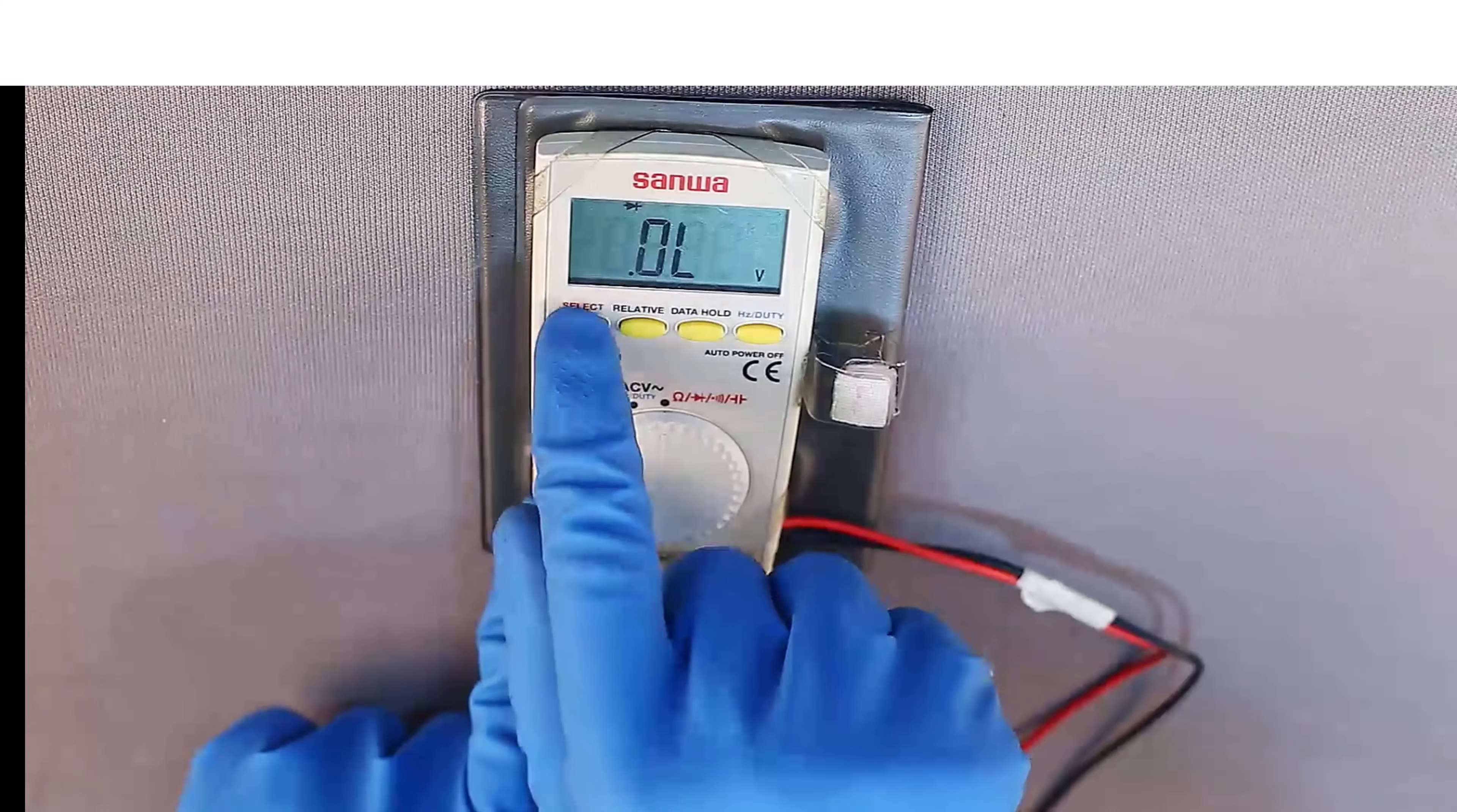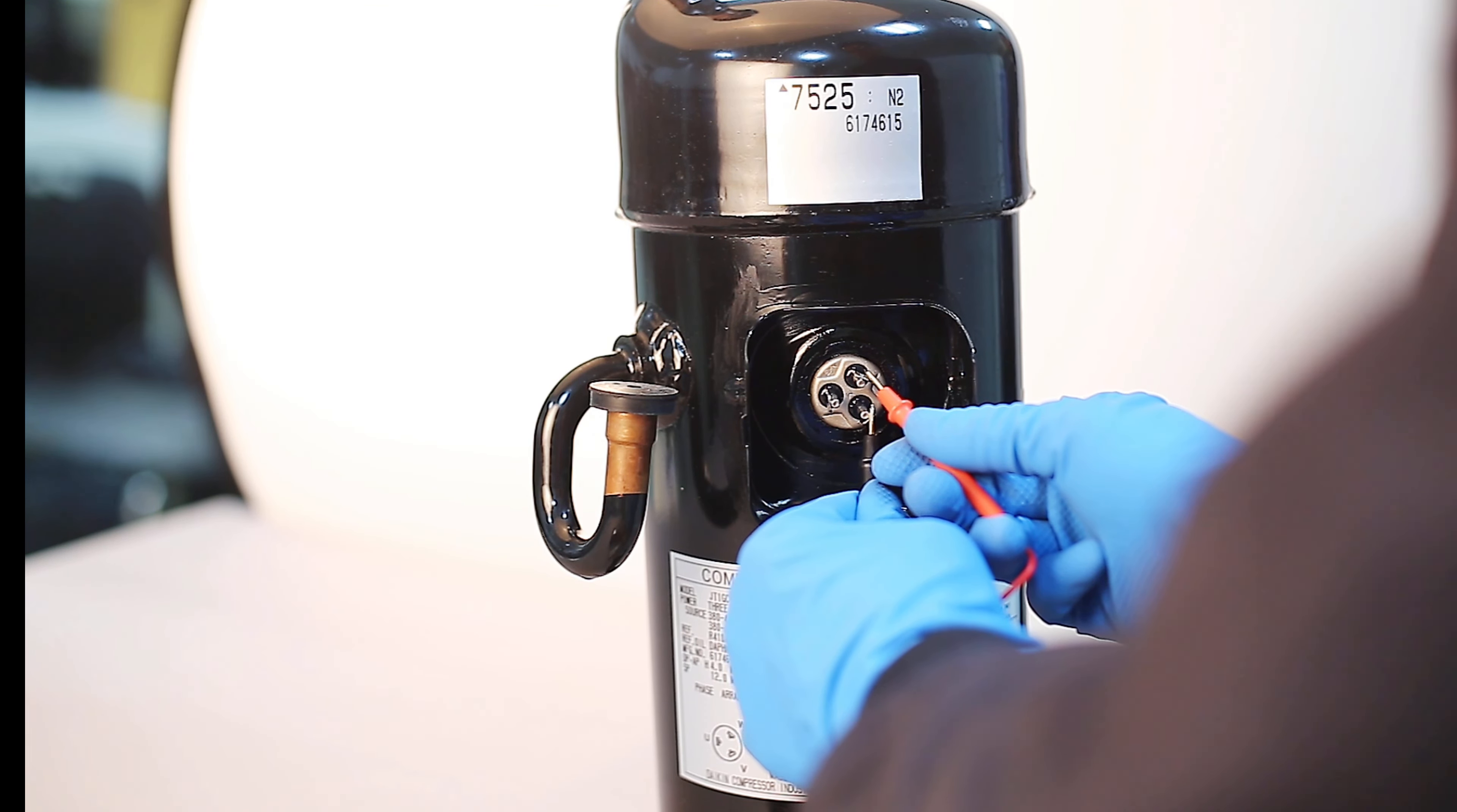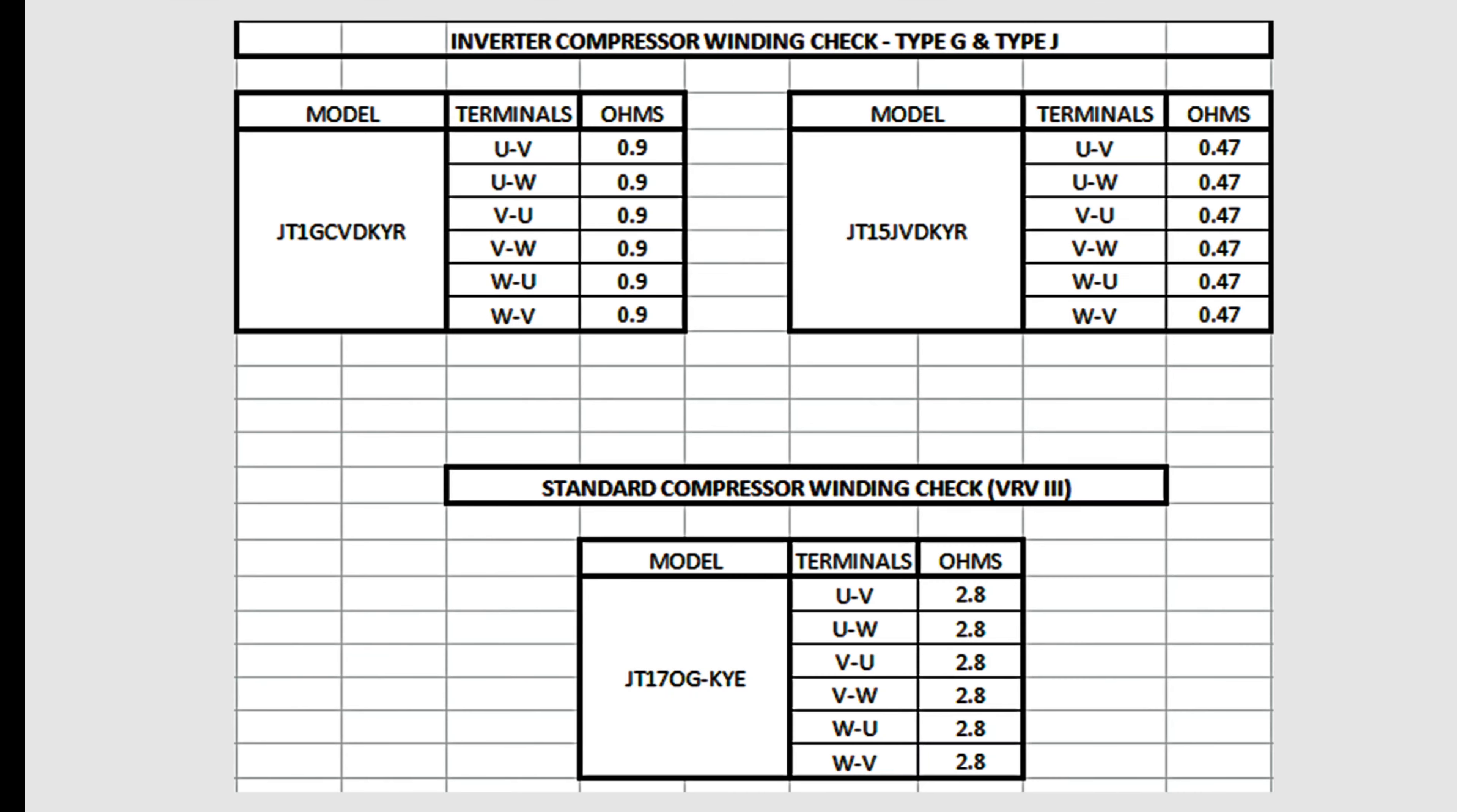Now set the multimeter to resistance mode and check the resistance between U and V, U and W, and V and W one by one. The resistance value of all three checks should be as per reference value based on the compressor model, plus or minus 10 percent. The check sheet for this test is shown on the screen.